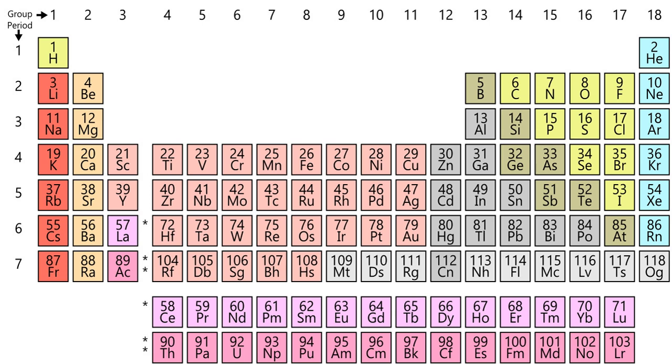The lightest chemical elements are hydrogen and helium, both created by Big Bang nucleosynthesis during the first 20 minutes of the universe in a ratio of around 3 to 1 by mass or 12 to 1 by number of atoms, along with tiny traces of the next two elements, lithium and beryllium.